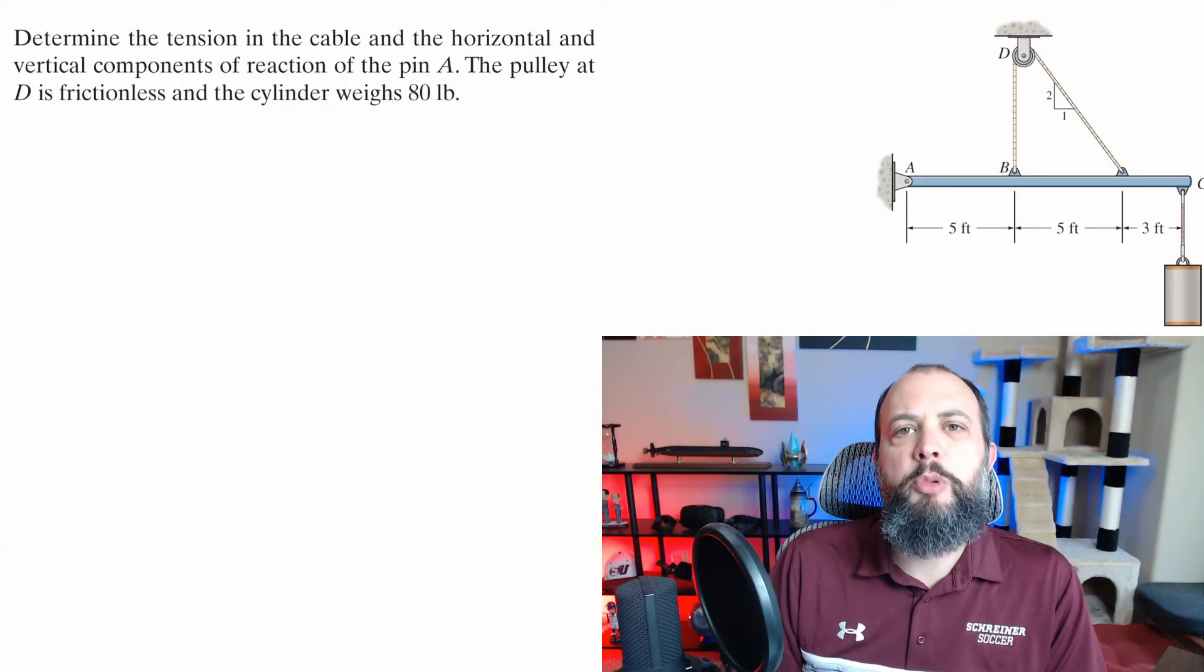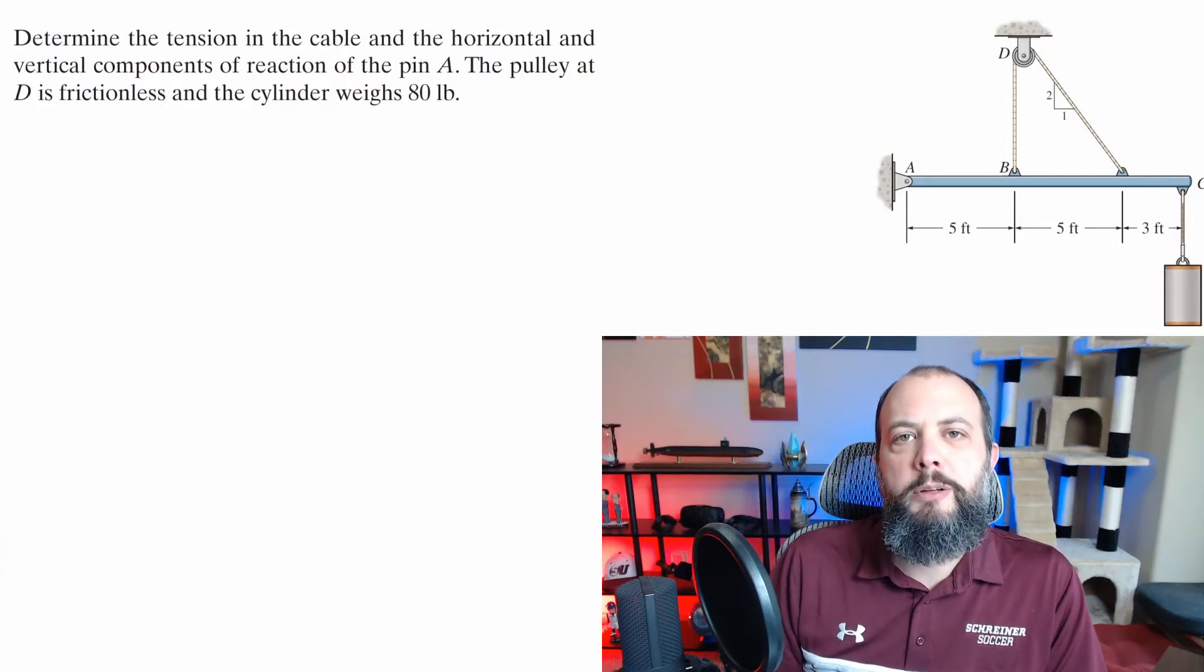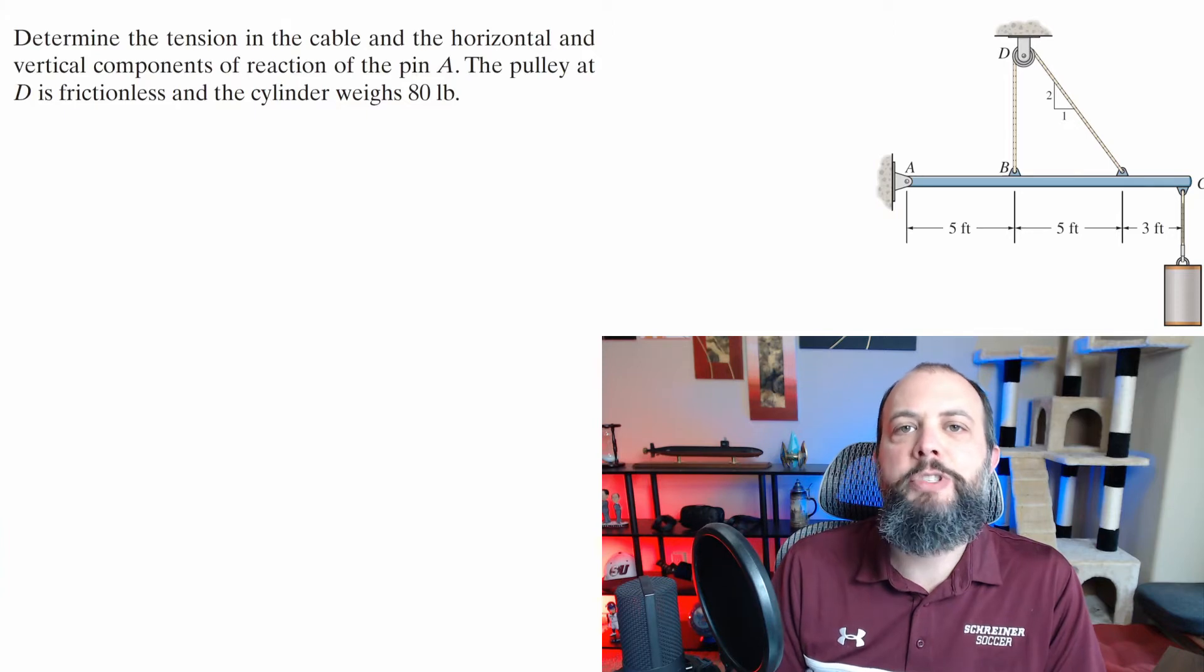This problem looks a little bit more complex than the last one because of the rope, but since tension on both sides of the rope will be equal to each other, we'll still end up with just three unknowns for this problem, not four.